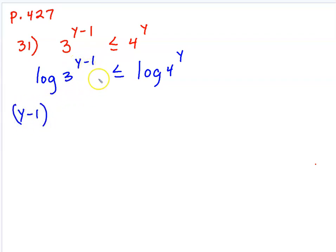So now that I have done log on both sides, I can use the power property on both sides. I'm going to bring down this exponent, y minus 1, and make it so that it multiplies by log 3. And I'm going to do the same thing over here. I'm going to bring down this y and use it to multiply times log 4. So just like we talked about in class, my goal is to solve for y.